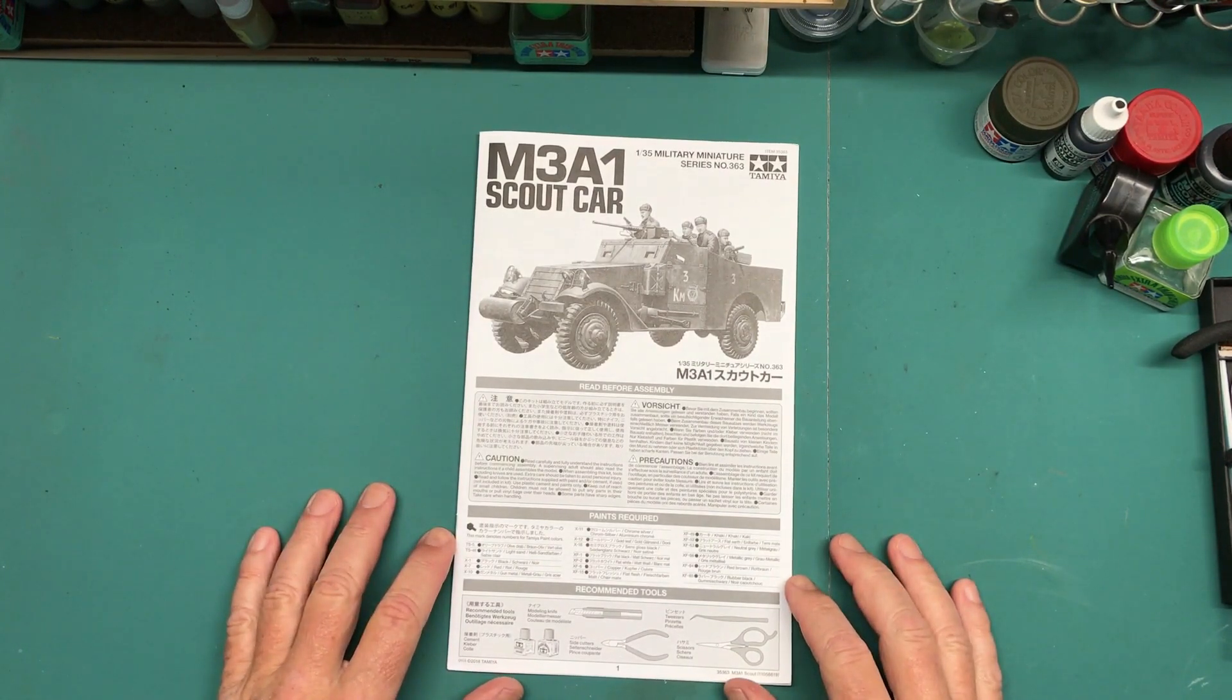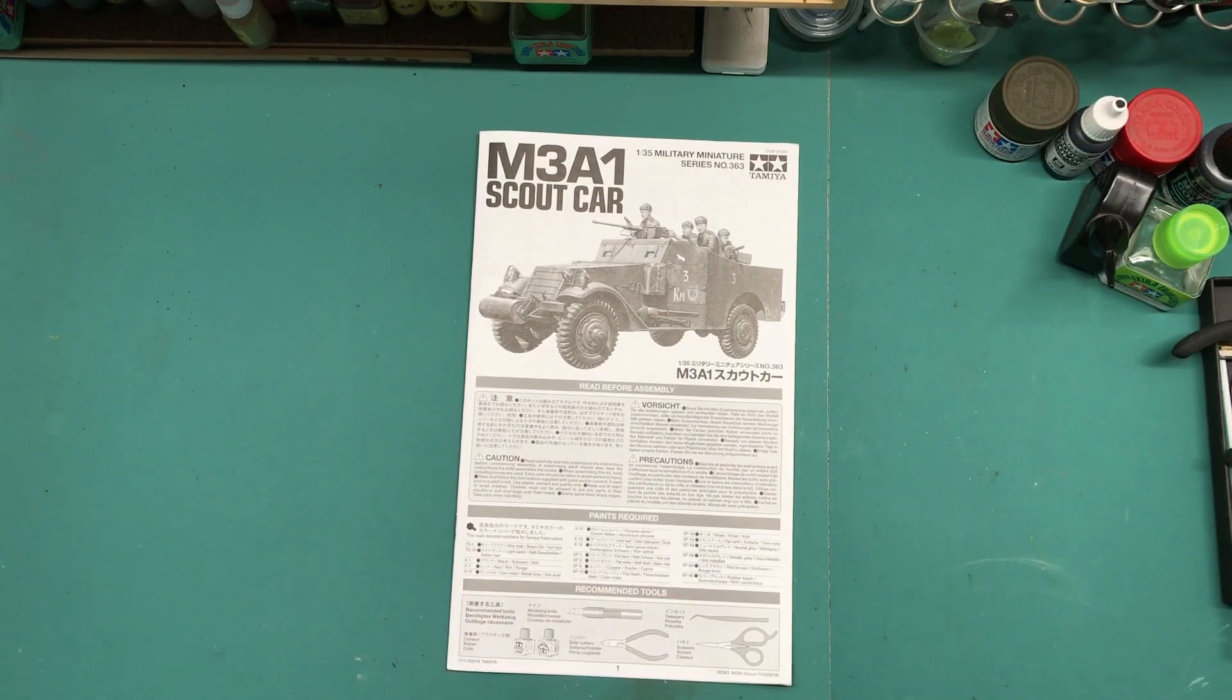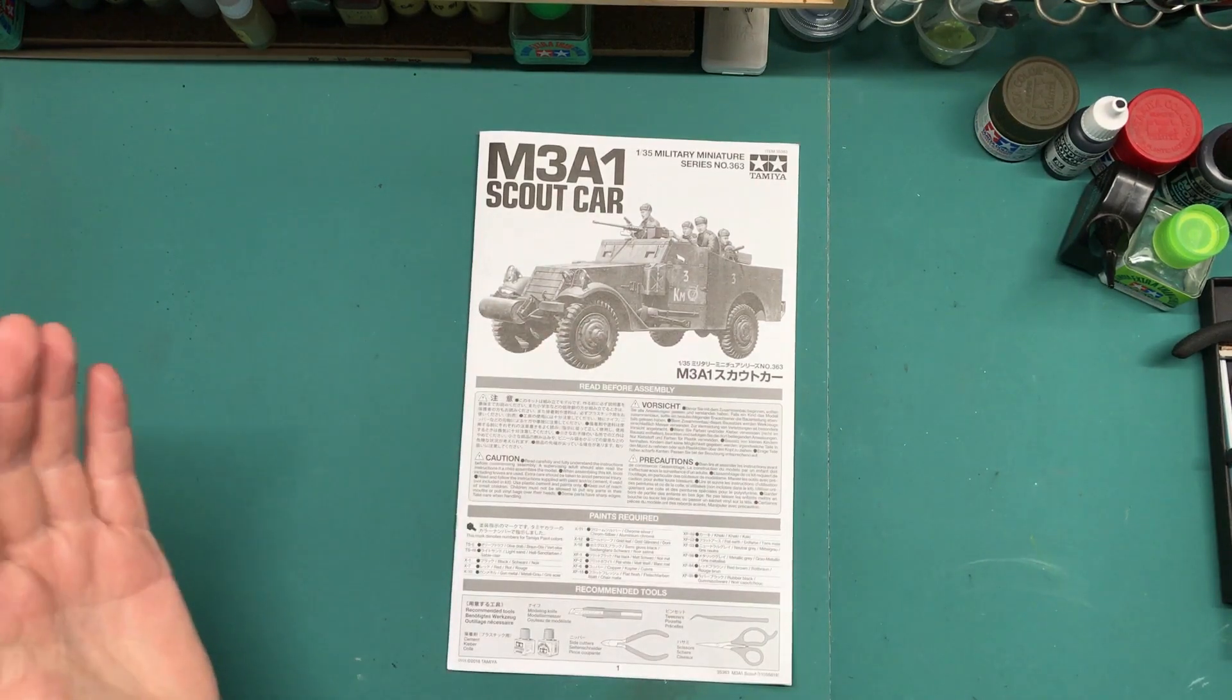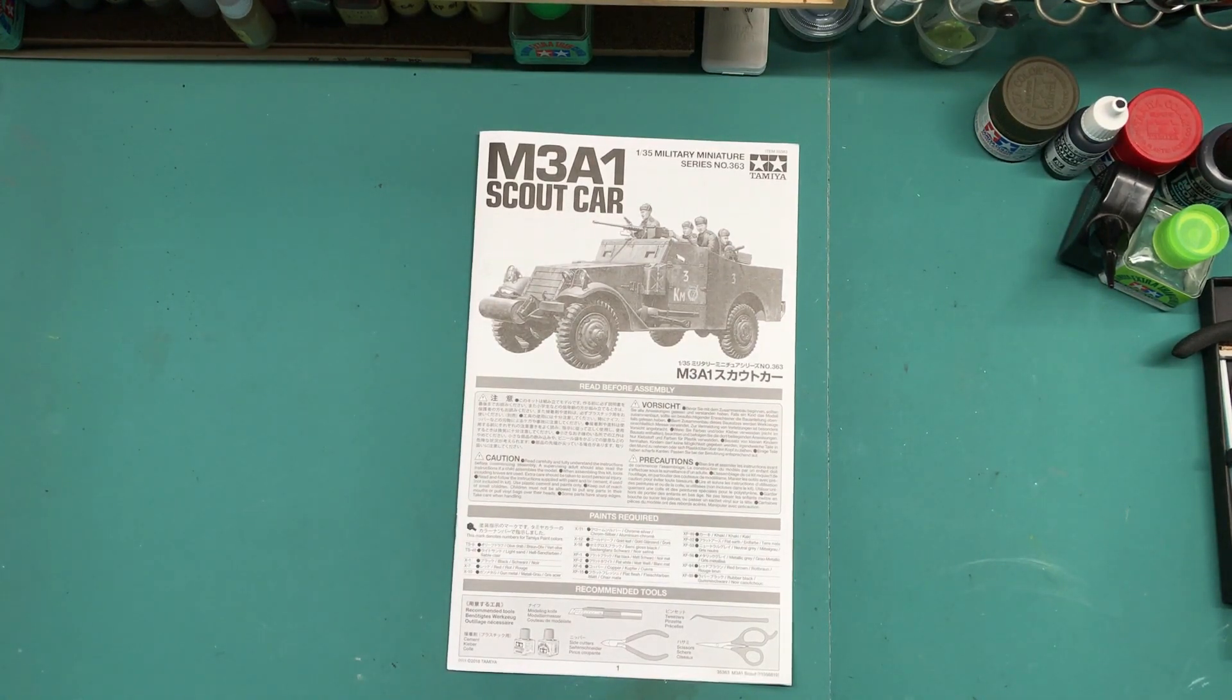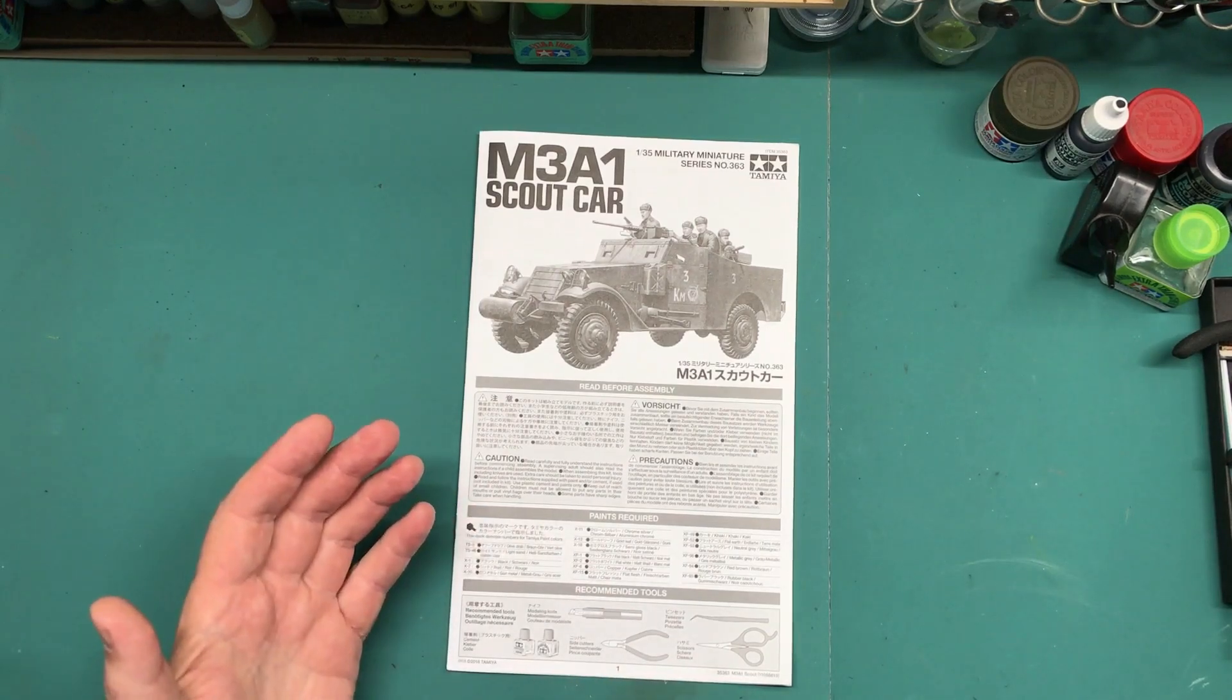For this series I've chosen the Tamiya M3A1 Scout Car in 1/35th scale. It's a relatively new tooling from 2018, and from everything I've seen and read in videos and reviews, it's a very good kit and goes together easily, not overly complex. It's a single color vehicle, and that is pretty much the reason why I chose this for the next Plastic Models for Beginners kit.